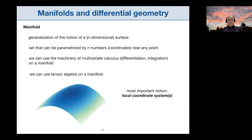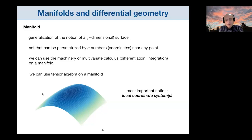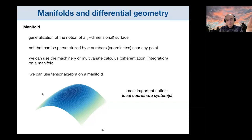The most important notion is the notion of a coordinate system. We have to think about local coordinate systems, since a manifold can sometimes be covered by a global coordinate system but this is not usually the case. Instead of spelling out the full mathematical definition — which requires topology — I'll try to explain on pictures how the definition of a manifold works and what its most important features are.